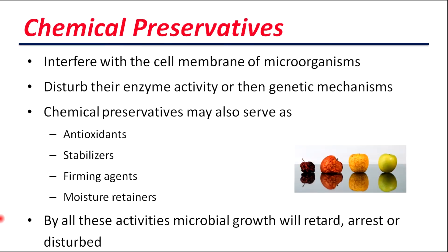When we add chemical preservatives into a food, they interfere with the cell membranes of microorganisms and disturb their enzyme activity and genetic mechanisms. Chemical preservatives may also serve as antioxidants, stabilizers, firming agents, and moisture agents. Through all these activities, microbial growth will be retarded, arrested, or disturbed.